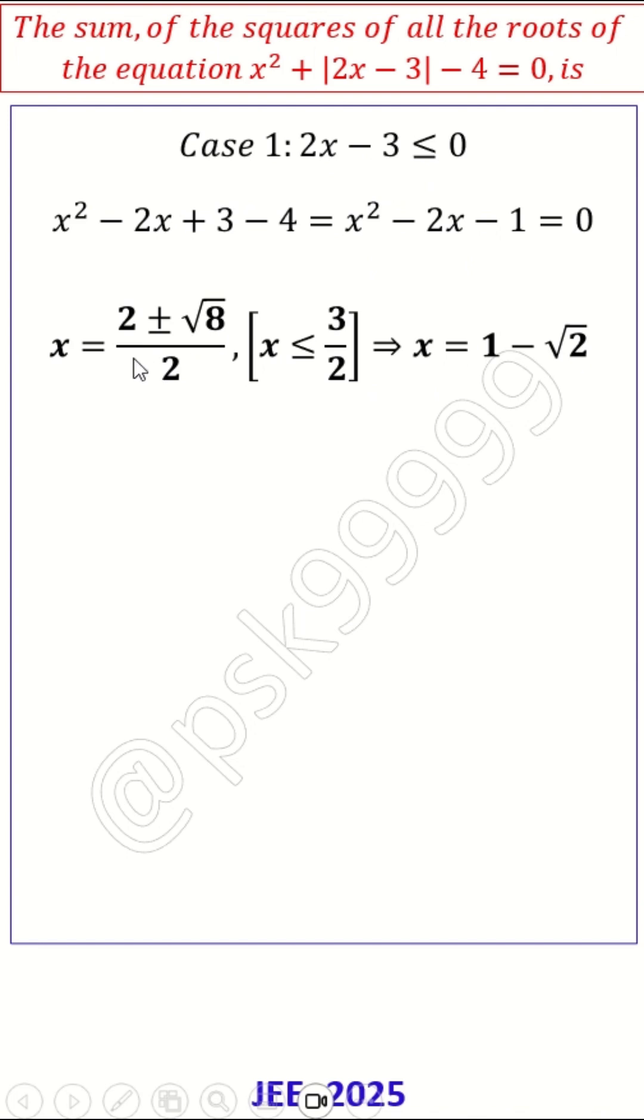In this case, the roots are (2 ± √8)/2, and the condition is x ≤ 3/2. Only one of them will satisfy this—that is 1 - √2. So your α² + β² approach will go wrong in this case.